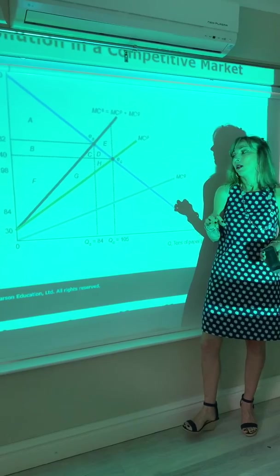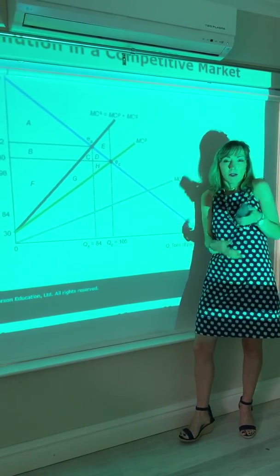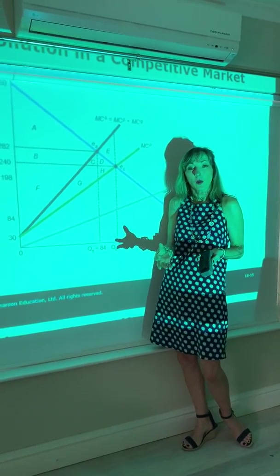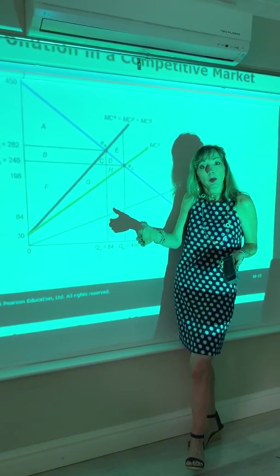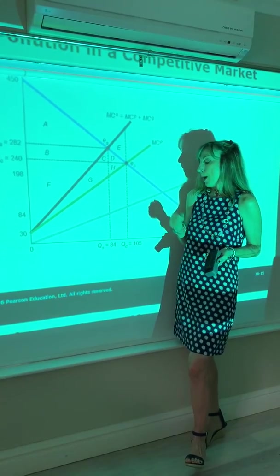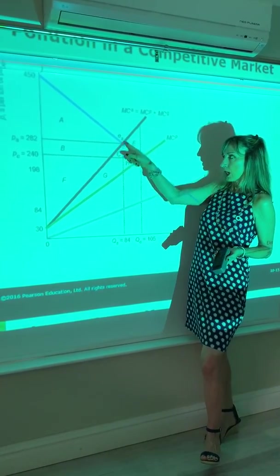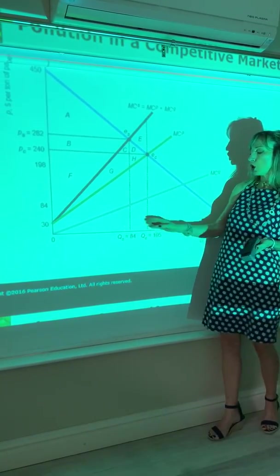And area E represents a deadweight loss. It's kind of the opposite of the deadweight loss you saw when we compared perfect competition with monopoly. We saw it was the deadweight loss because monopoly produced too little. But in this instance,